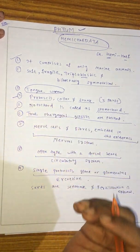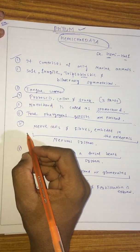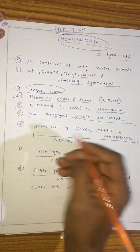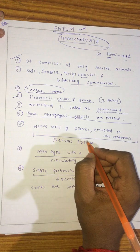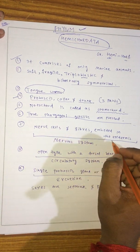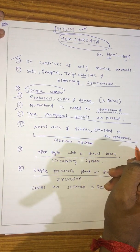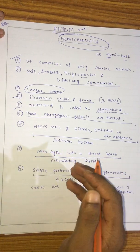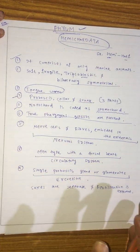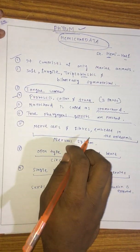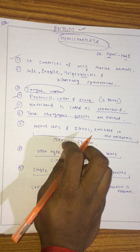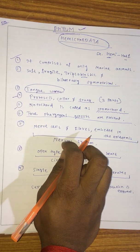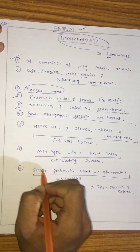The nervous system is a network of nerve cells and fibers embedded in the epidermis. This is the nervous system of Phylum Hemichordata.